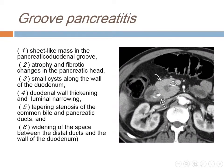Groove pancreatitis is an uncommon type of chronic pancreatitis involving inflammation between the head of pancreas, duodenum, and CBD. Radiologically, it appears as a sheet-like mass in the pancreaticoduodenal groove, atrophy and fibrotic change in the pancreatic head, small cysts along the wall of the duodenum, duodenal wall thickening and luminal narrowing, tapering stenosis of CBD and pancreatic duct, and widening of the space between the distal duct and the wall of the duodenum — this is rarely seen in adenocarcinoma because it is occupied by the mass.